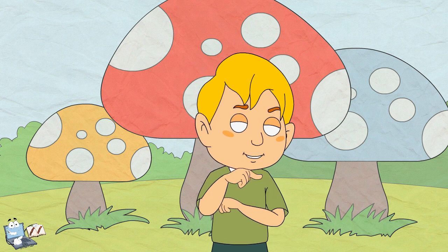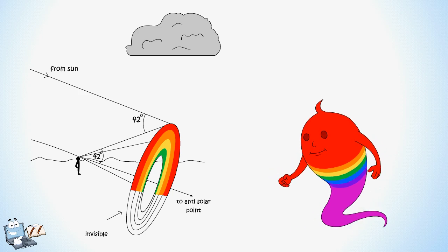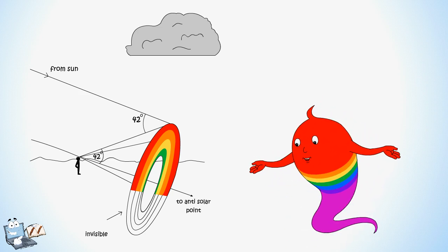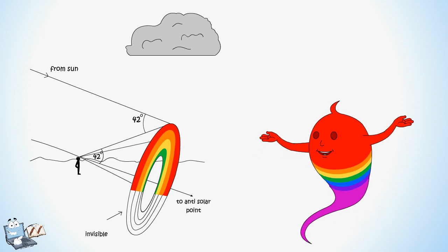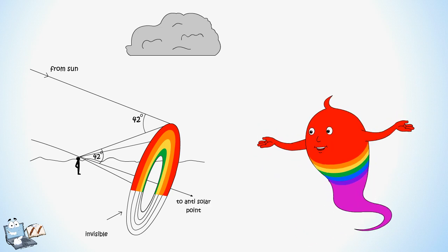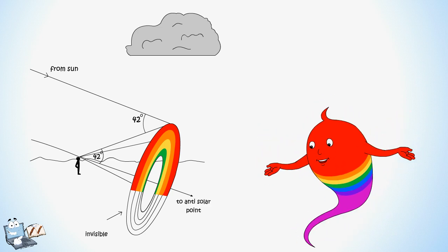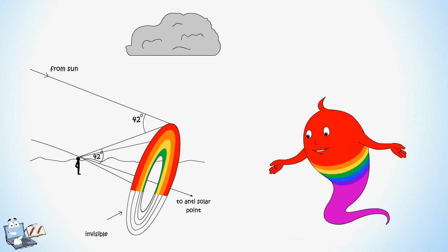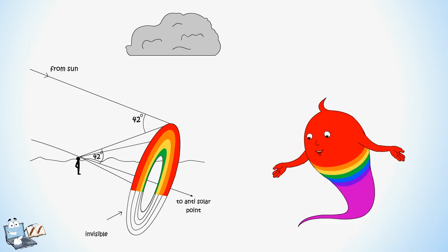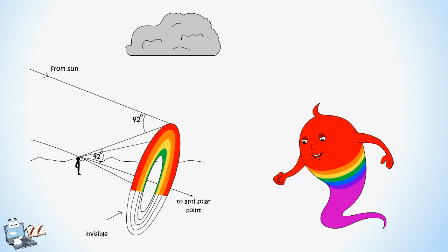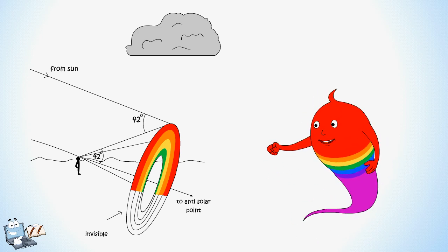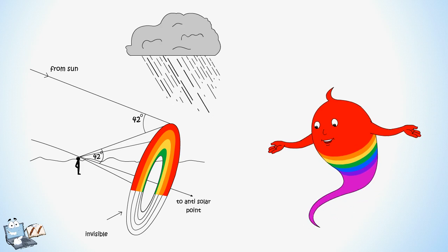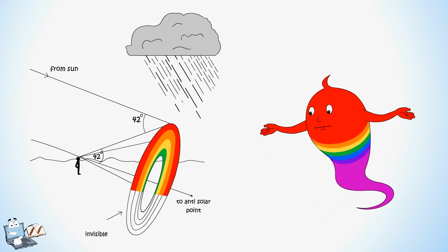I have one question — why is a rainbow always in an arc? Well, rainbows actually form a complete circle; however, only half is visible. The horizon only allows us to see half of the rainbow circle, so we just see an arch. What causes the rainbow to have a circular formation is the way that raindrops fall.